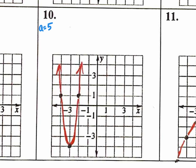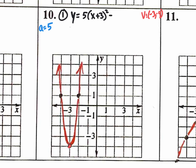Based off these points, instead of one over one up, it's one over five up, so we can assume the a value is five. The vertex is negative three, negative four — and that's your h and k. So we write the equation in vertex form: y equals 5, open parentheses, x minus negative three — which becomes x plus three — close parentheses squared, plus negative four, which is just minus four.